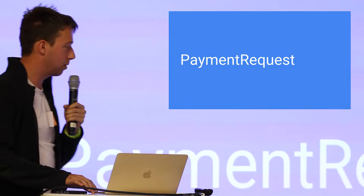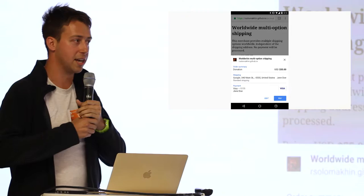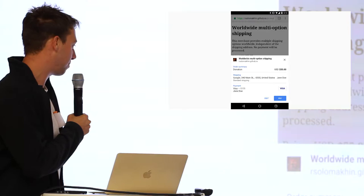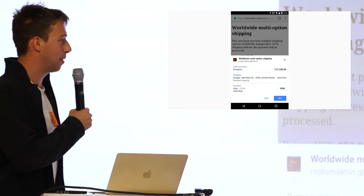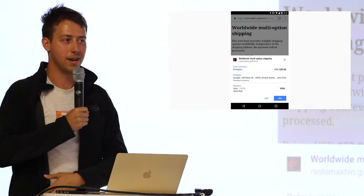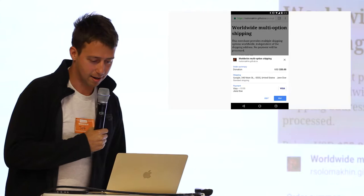The basics of Payment Request is that you call this JavaScript API and it presents a native dialogue with the price, shipping, and payment method, and the user can select their different payment methods. I'm sorry I didn't get a video or live demo — I have my Nexus 6P with me, so if you want to try it out later just find me.